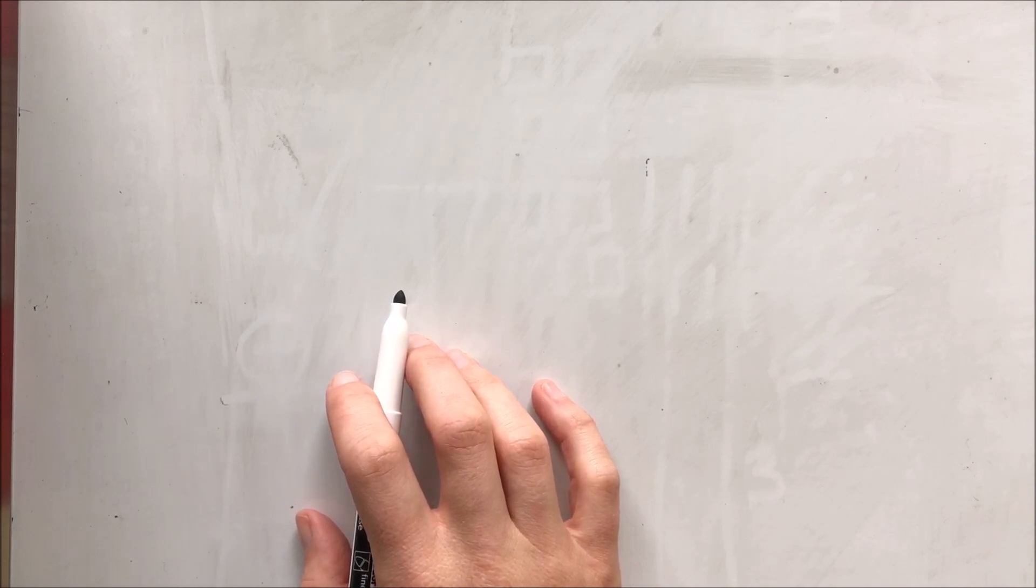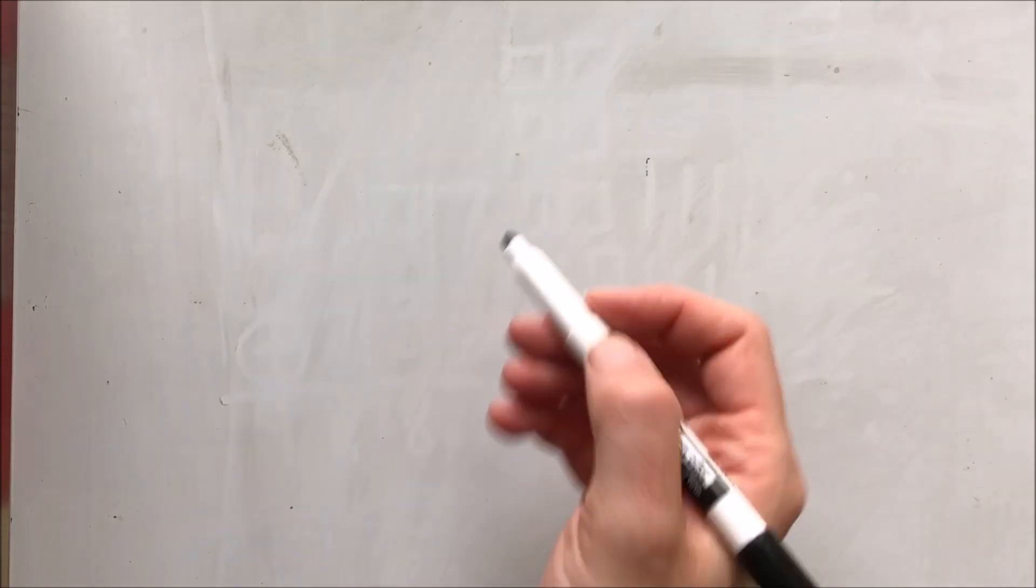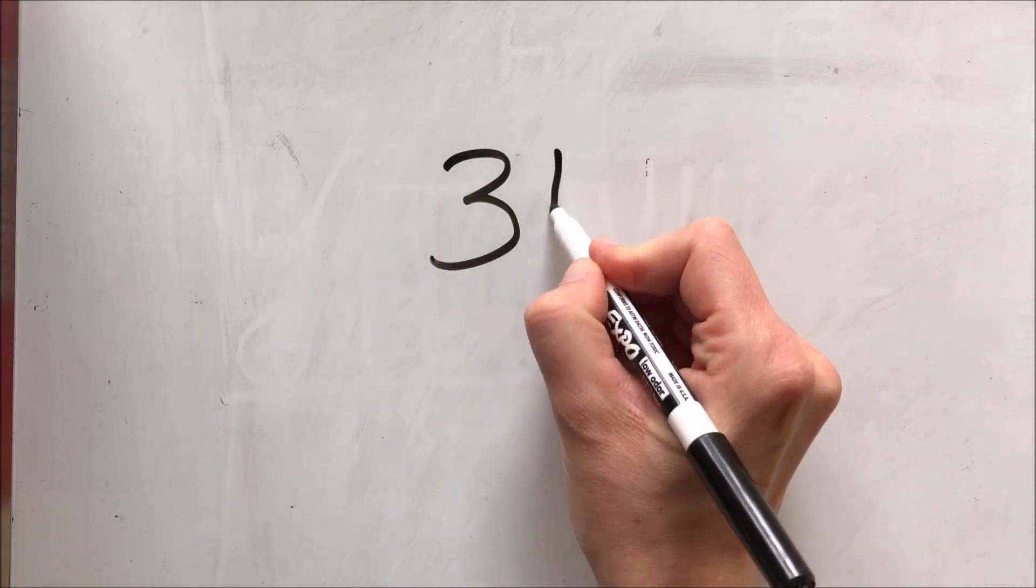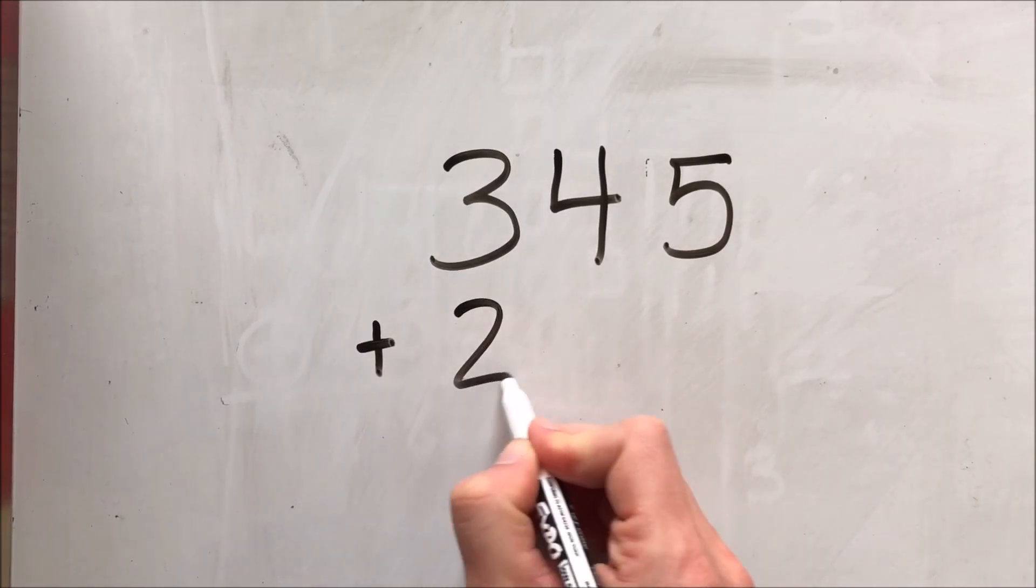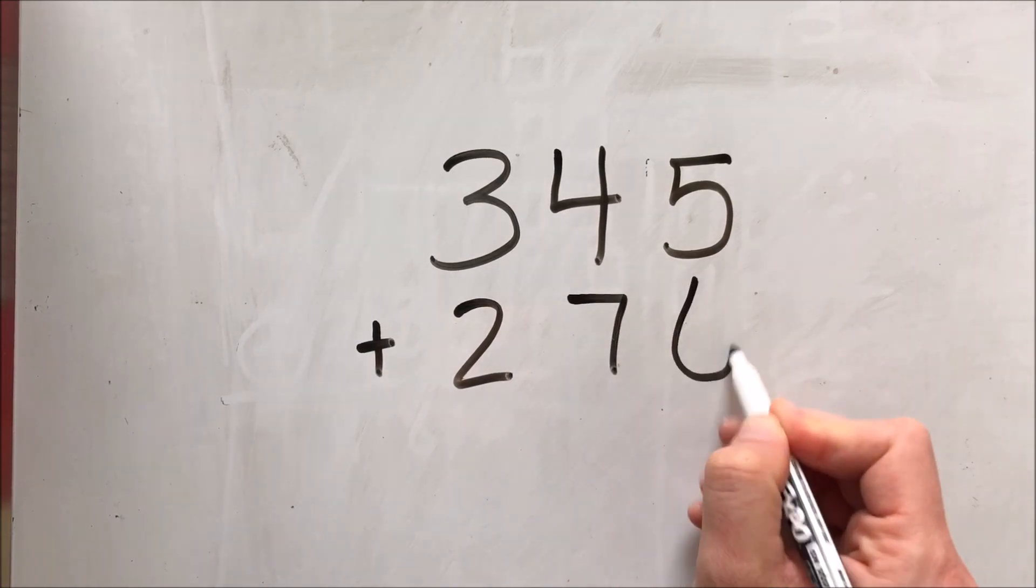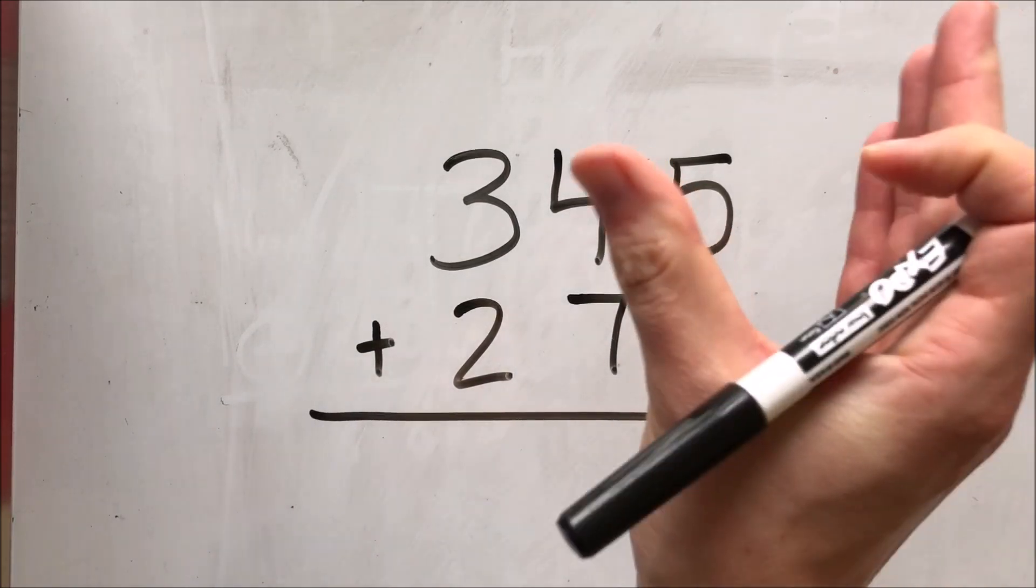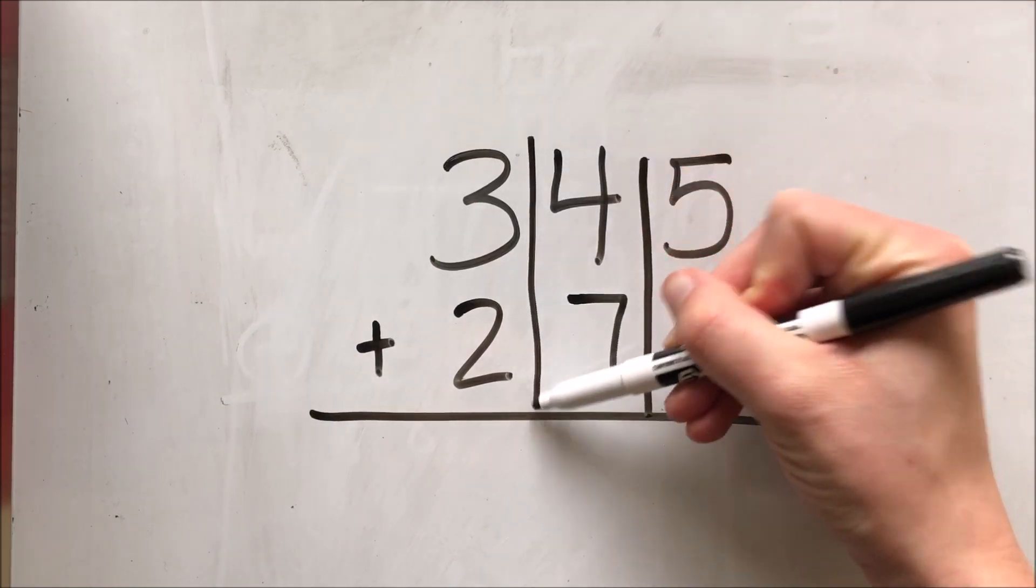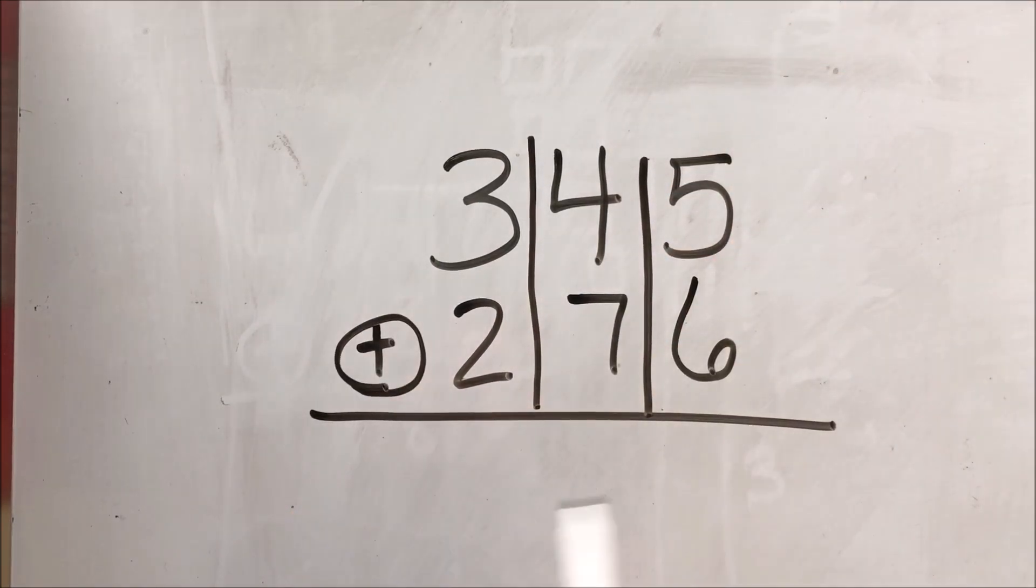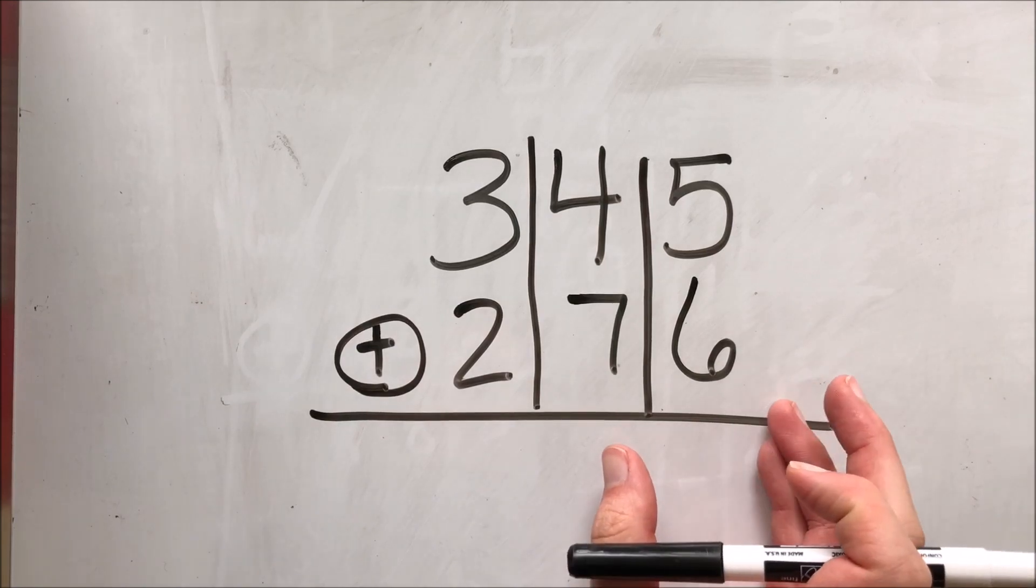This time I'm going to add but I'm not going to draw a picture. So I'm going to start with the problem 345 plus 276. Just like last time I'm going to write my problem vertically and I'm still going to draw my lines and circle my sign just to keep myself nice and neat.